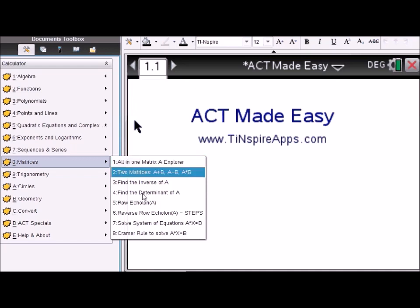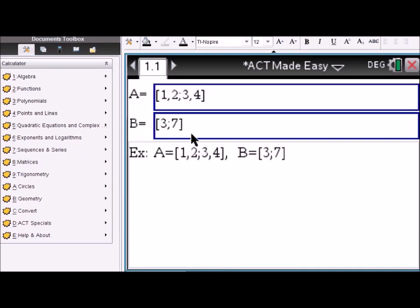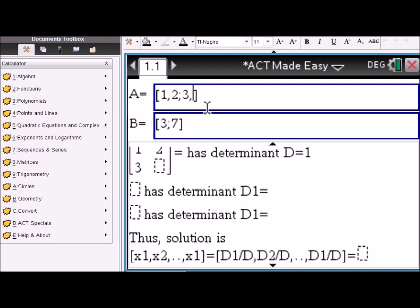Okay, matrices. You can find inverse, determinant, row echelon, and also Cramer's rule. So let's do Cramer's rule. You enter a matrix here.